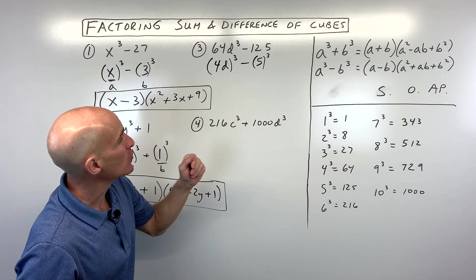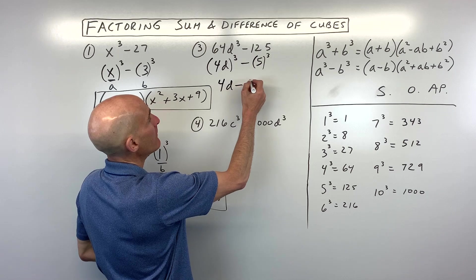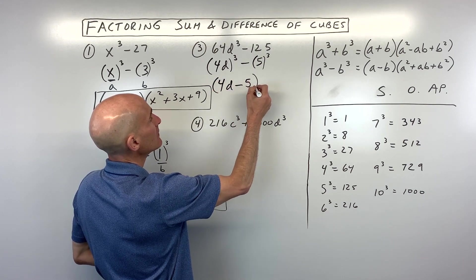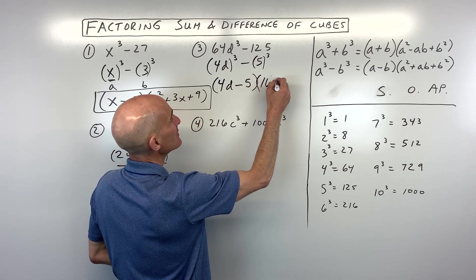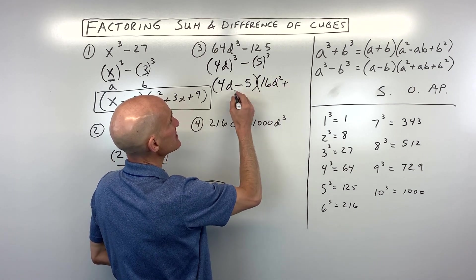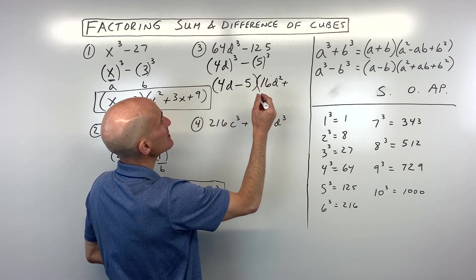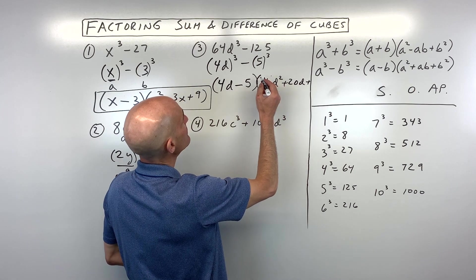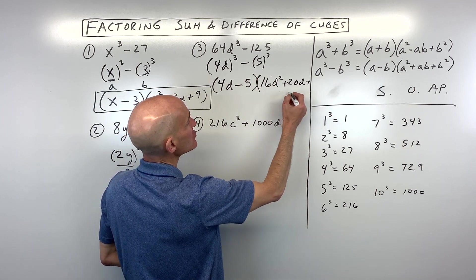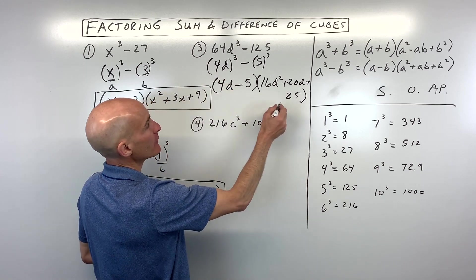So following that SOAP pattern, that acronym, we're going to say a - b, a², which is 4d times 4d, which is 16d². Opposite, since we subtracted here, we're doing the opposite, adding here, a times b, so 4d times 5 is 20d, plus b², which is 5², which is 25. Remember, the last one's always positive. And that's it. You've got it fully factored.